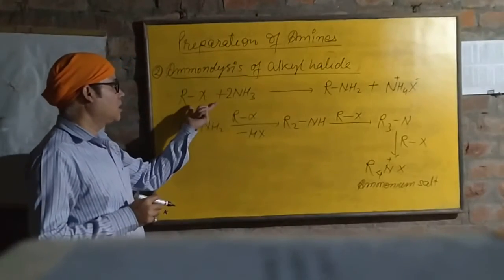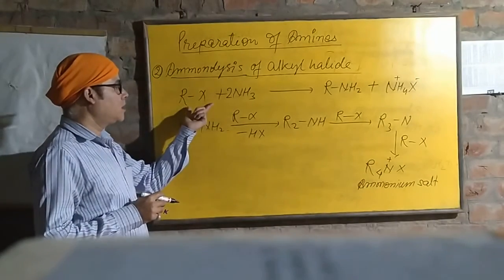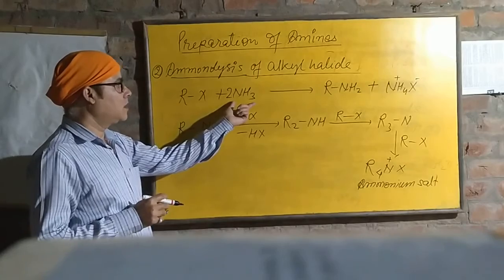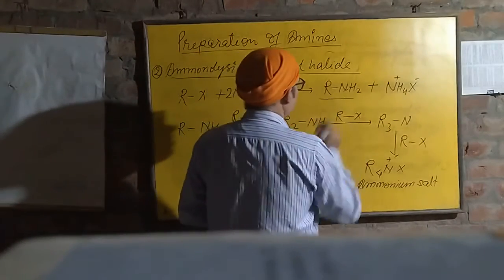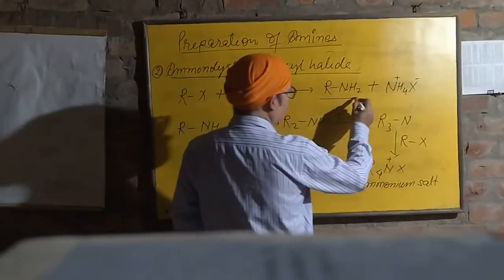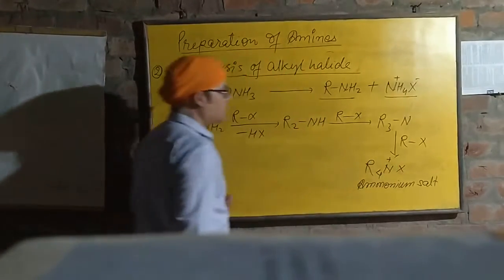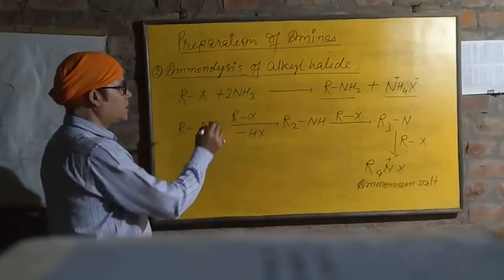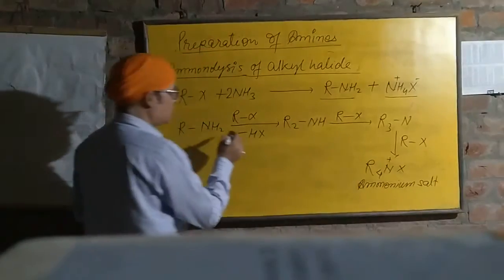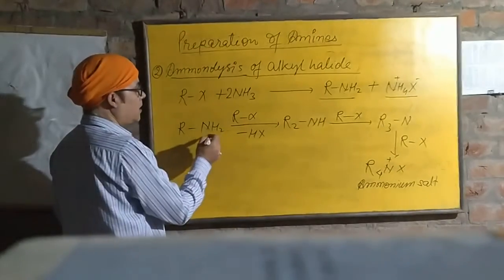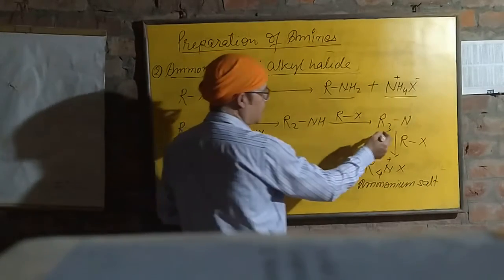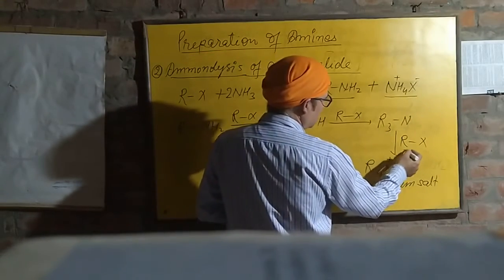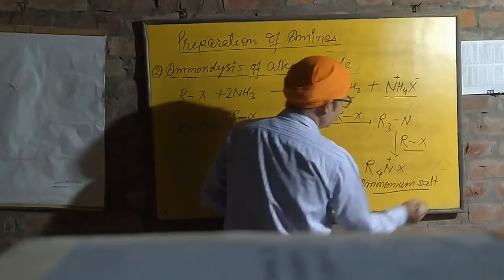Means here, attachment of alkyl group to the amine. Here you can see alkyl amine is formed. Other is the ammonium salt. This reaction can be continued if we take next alkyl halide, remove one hydrogen. Next alkyl halide, remove one hydrogen. In the last, we get ammonium salt.